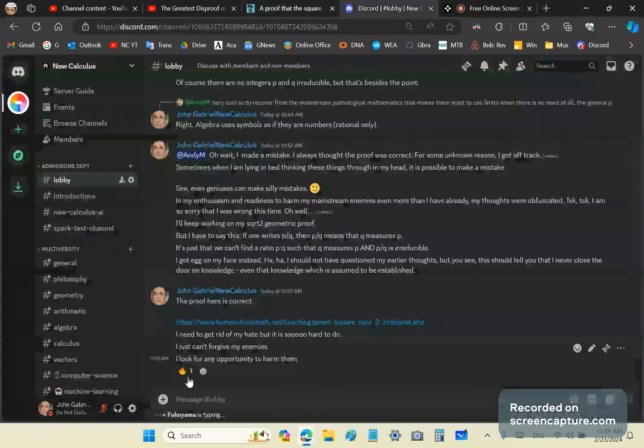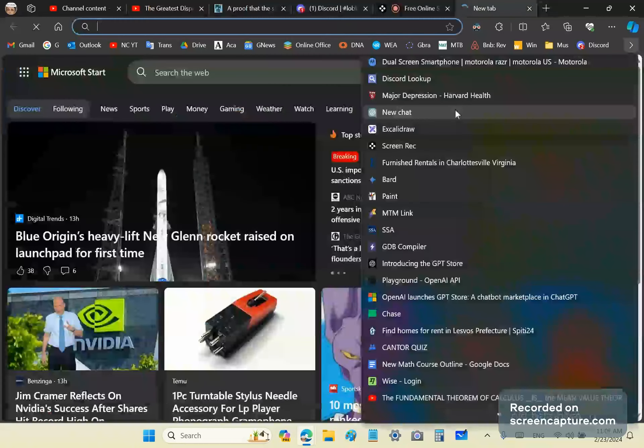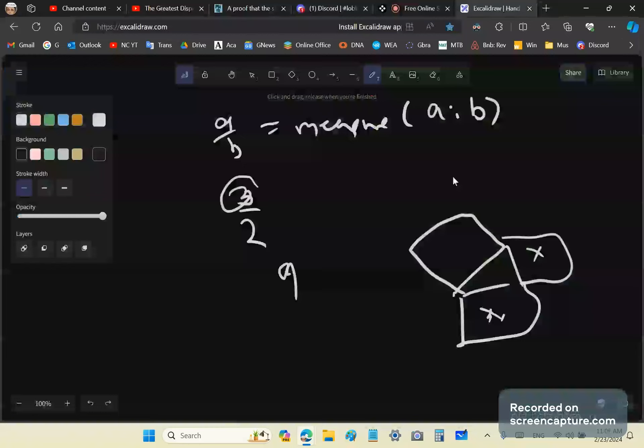The thing about this proof I just want to point out: if one writes p over q, that means q measures p. Let's pull up a board here. When one writes a over b, it means the measure of the ratio a:b.